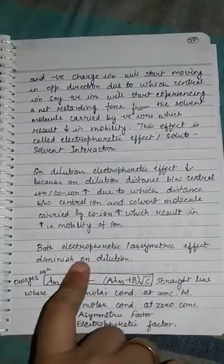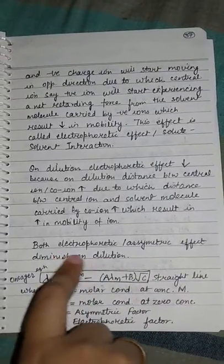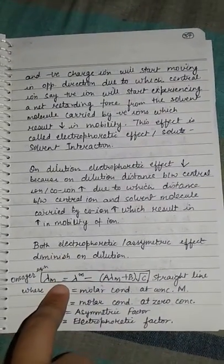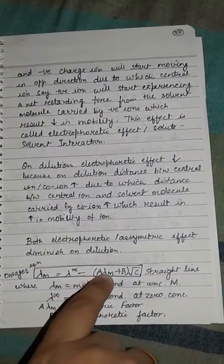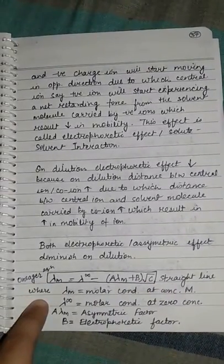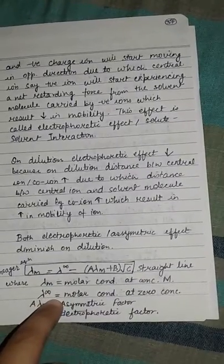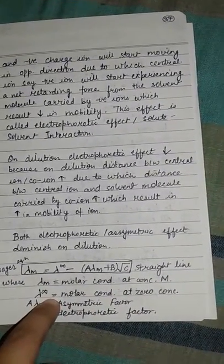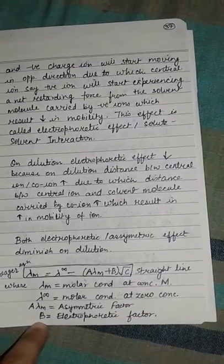Both electrophoretic or asymmetric effect diminish on dilution. This Onsager equation: lambda M equals lambda infinity minus A times lambda M plus B times square root of C. This is a straight-line equation where lambda M is molar conductivity at concentration M and lambda infinity is molar conductivity at zero concentration. A lambda M is asymmetric factor and B is electrophoretic factor.